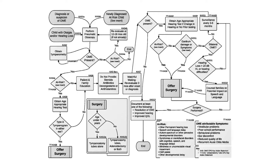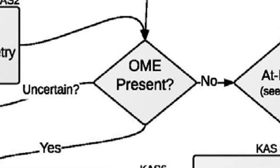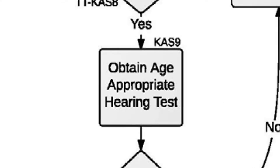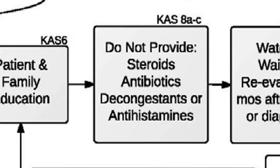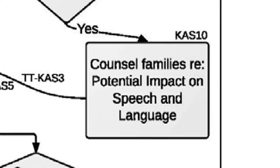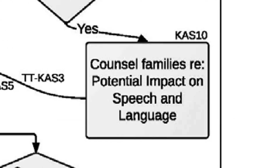The American Academy of Otolaryngology Head & Neck Surgery published an update of the guideline for treatment of children with otitis media with effusion. This guideline recommends consideration of ear tube placement for children with at least three ear infections in six months or four ear infections in a year. For those with otitis media with effusion lasting at least three months, a hearing test with tympanogram is recommended. If the tympanogram is flat or type B, surgery can be offered. Treatment with steroids, antibiotics, decongestants, or antihistamines is not recommended for otitis media with effusion. If a hearing loss of 20 decibels or more is noted or there is subjective hearing difficulty, families should be counseled on the potential impact on speech and language, and surgery should be recommended.